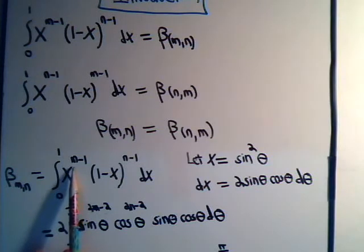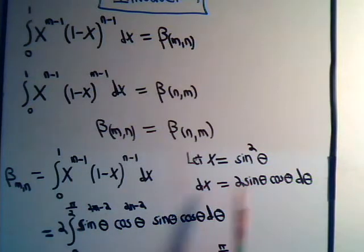x to the m minus 1, that's going to be the sine squared of theta to the m minus 1, that will be 2m minus 2.